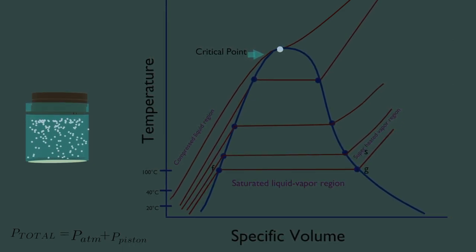Eventually, it resembles a vapor, but we can never tell when the change has occurred. Above the critical state, there is no line that separates the compressed liquid region and the superheated vapor region.